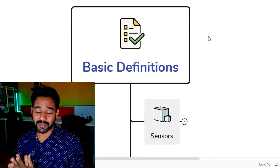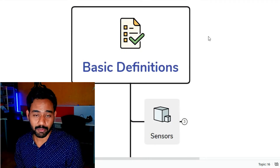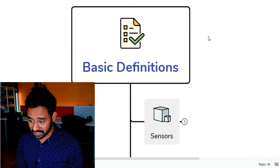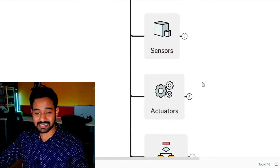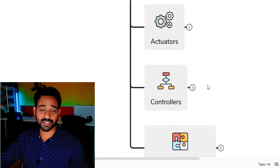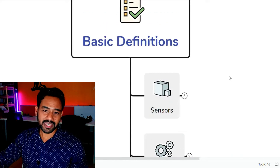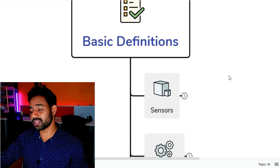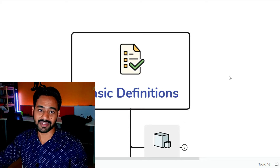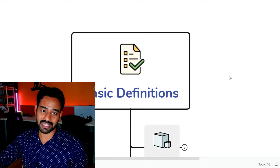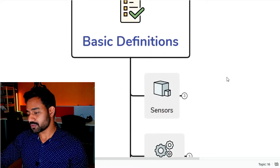I am using a screen in front of me right now and I'm going to explain with the help of a mind map. We are going to talk about the basic definitions — sensors, actuators, controllers, and development boards. These are very important definitions you must know before jumping into any further tutorial. That's why we are covering this in advance of any development activity we are going to do in the future with respect to the Arduino development board.